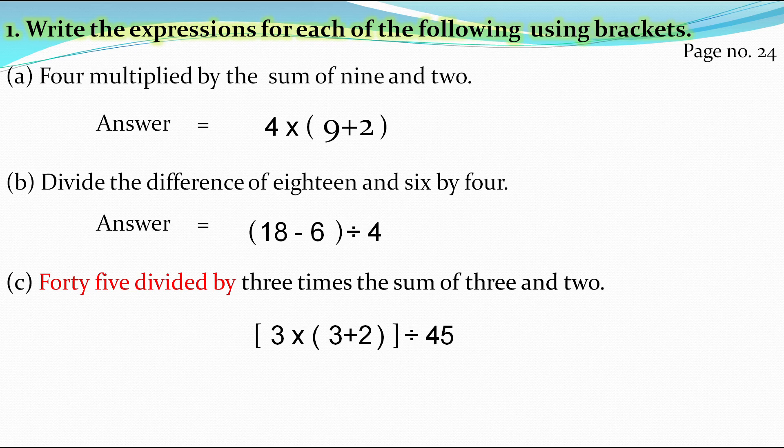The final answer of this expression is: first there is a square bracket, inside that there is a small bracket, and then this whole bracket is divided by 45, giving 45 ÷ [3×(3+2)].